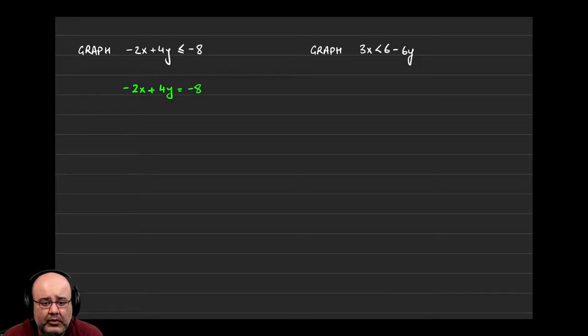...or you can solve for y and turn it into slope-intercept form, then use the y-intercept and slope to graph it. But given the form that it's in—looking at the numbers 2, 4, and 8, both 2 and 4 go into 8—the easiest way to actually graph this would be to find x and y intercepts.